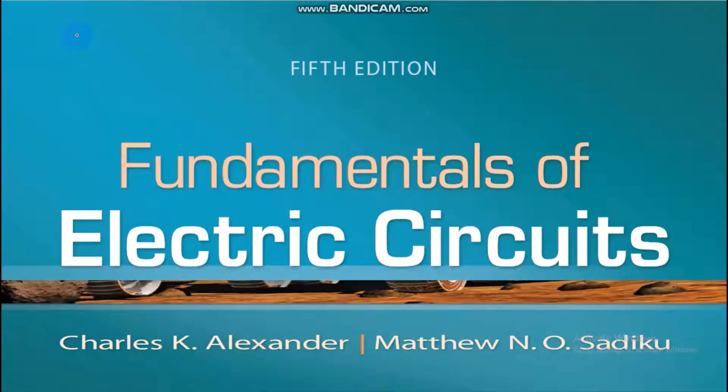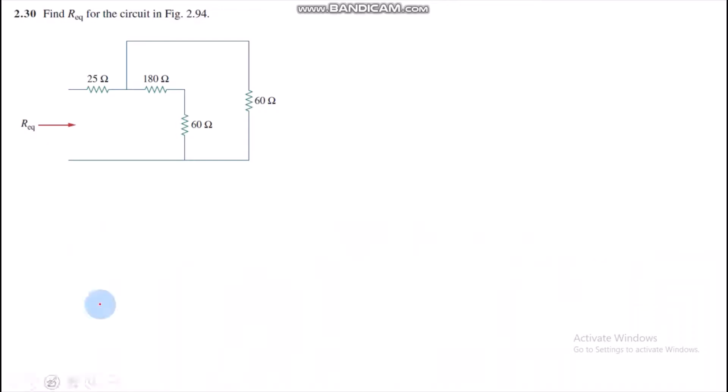Hello everyone. Today we are going to solve question number 2.30 from Fundamentals of Electric Circuits by Alexander and Sadiku. The question is find R equivalent of the given circuit. The circuit is shown on the screen and we have to calculate R equivalent of the circuit.